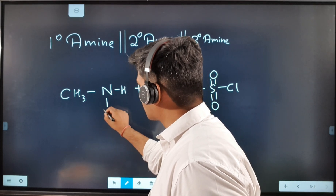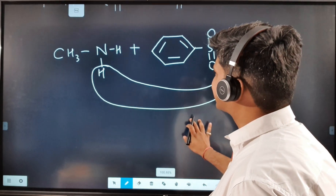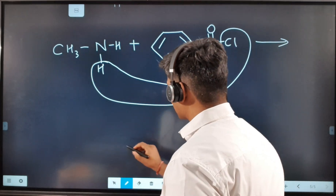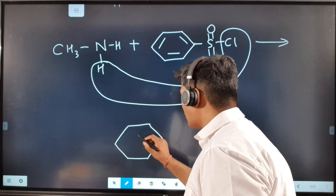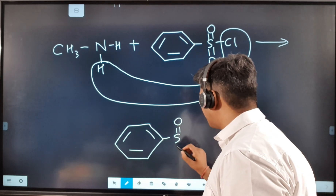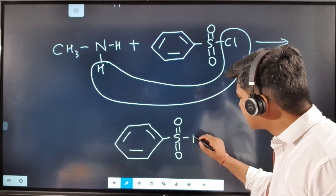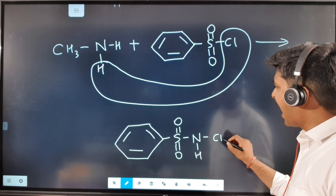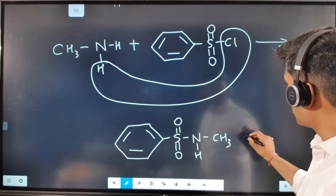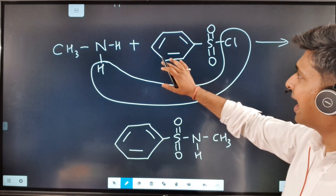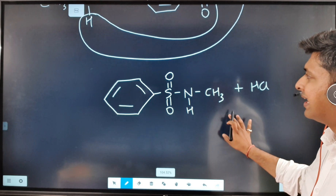Writing the primary amine as NH2, when it reacts with benzene sulfonyl chloride, H and Cl combine to form HCl. The NH then attaches in place of Cl. So we get benzene-sulfonyl connected to the primary amine — for example, methanamine — forming the sulfonamide intermediate.